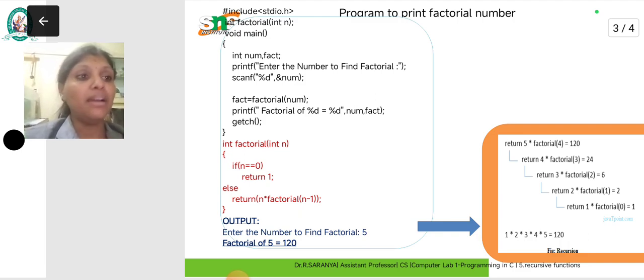How do you do this? 5 into 4 into 3 into 2 into 1. Check manually: 5 times 4 is 20, 20 times 3 is 60, 60 times 2 is 120, 120 into 1 is 120.